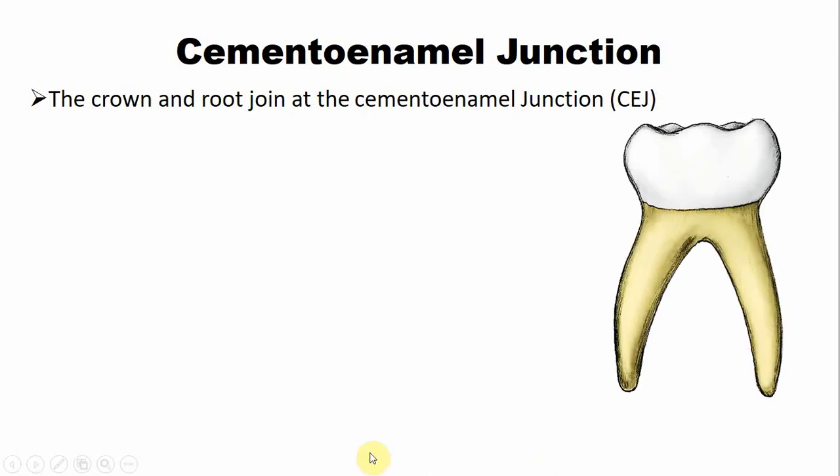So what is cementoenamel junction? The cementoenamel junction is an intersection or a joint where the crown and the root join each other. This is a picture of a mandibular deciduous molar and in this picture you can see this is an intersection or a union between the crown and the root portion. So this point is known as the cementoenamel junction or the CEJ.